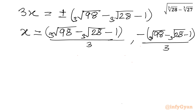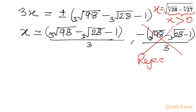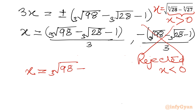The conclusion: since 28 is bigger than 27, x will always be positive because this radicand is positive. So we will reject the negative value of x. Our answer will be: cube root 98 minus cube root 28 minus 1, divided by 3.